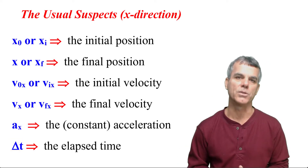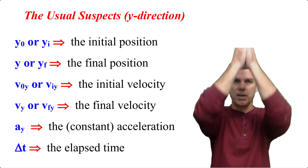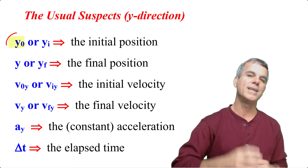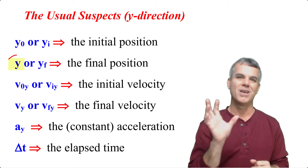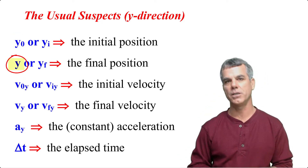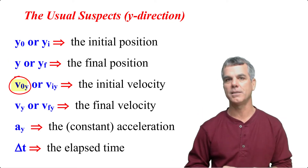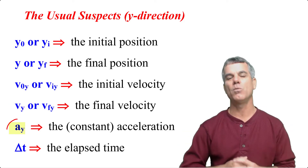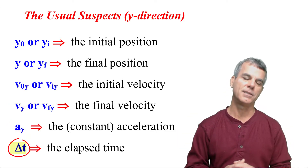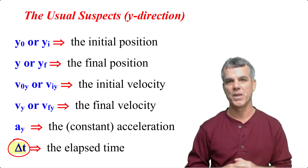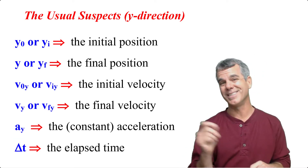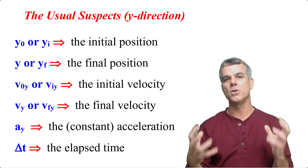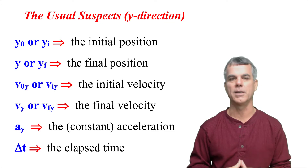If we're talking about vertical motion — so motion only along a vertical line — the quantities I will use are y0 for initial position, y for final position, v0y for initial velocity, vy for final velocity, ay for acceleration, and again delta t for elapsed time. Notice there is no delta tx or delta ty because time is a scalar and you cannot have x and y components for time.